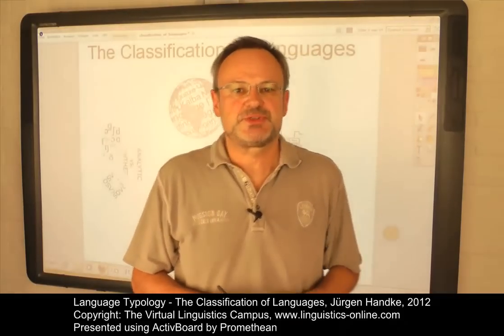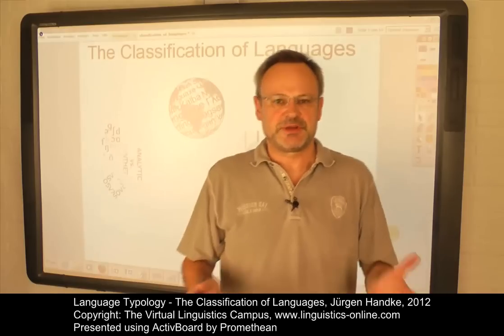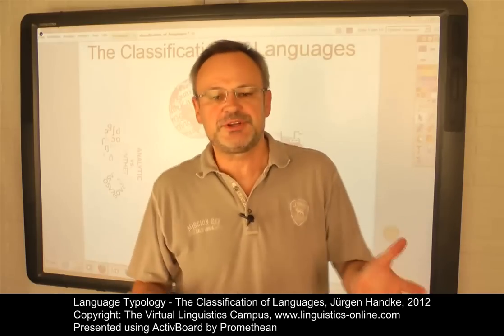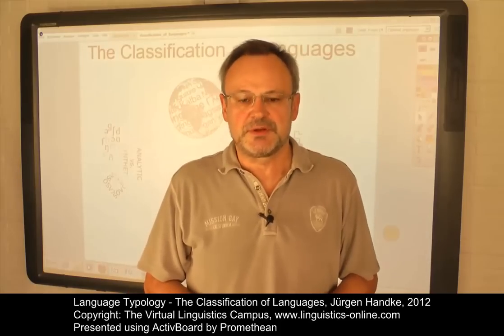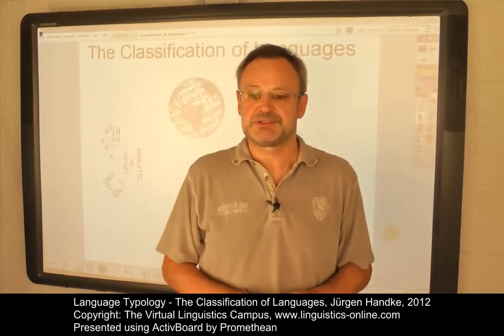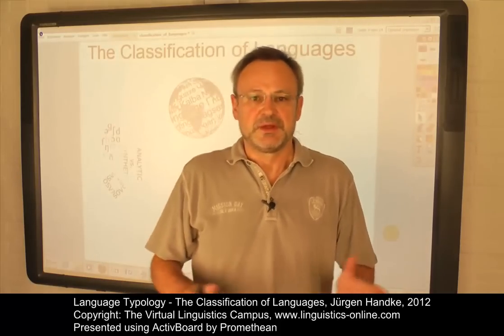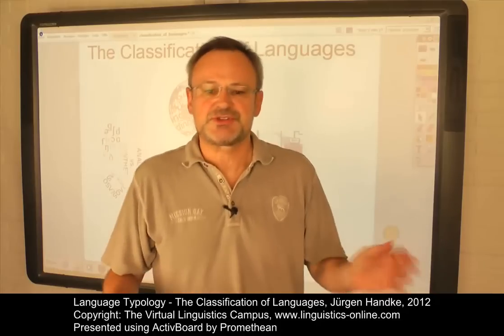At present, there are about 7200 living languages, ranging from regional types to the dominant languages of the Indo-European or Sino-Tibetan families. This e-lecture discusses and exemplifies the main linguistic parameters with which languages can be classified.